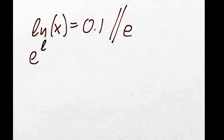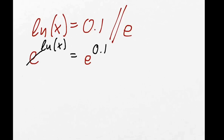Here is another one. We have ln x equals 0.1. What we need to do is get rid of the ln, and we know how to do that — we take both sides e. So e to the power of ln(x) equals e to the power of 0.1. We know e and ln cancel each other out. So we've got x equals e^0.1, and if we put that in the calculator we get 1.105.